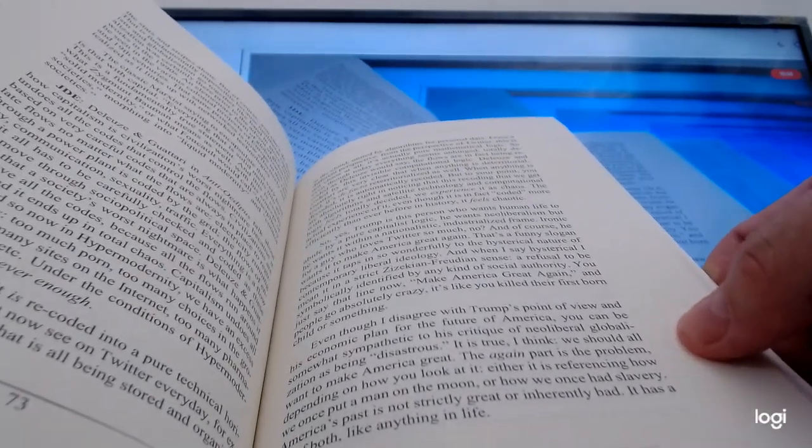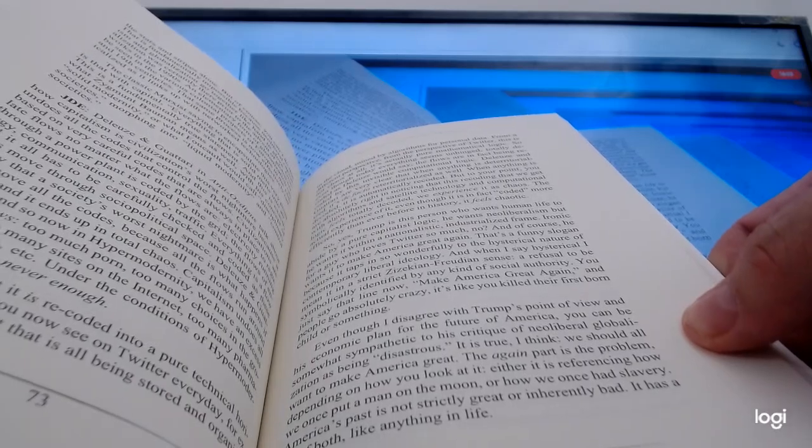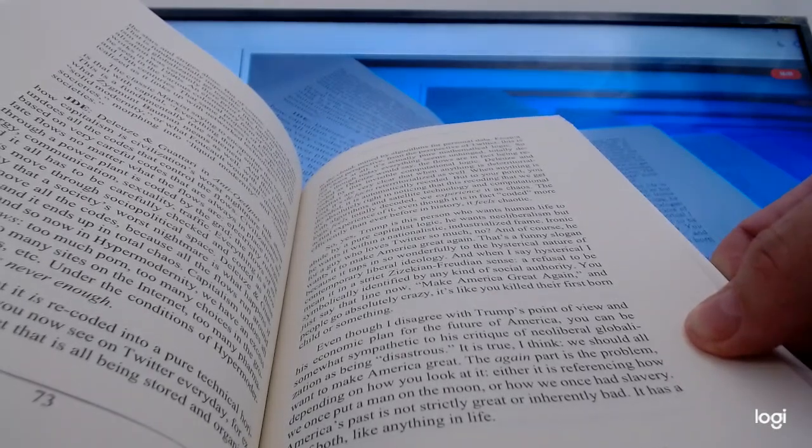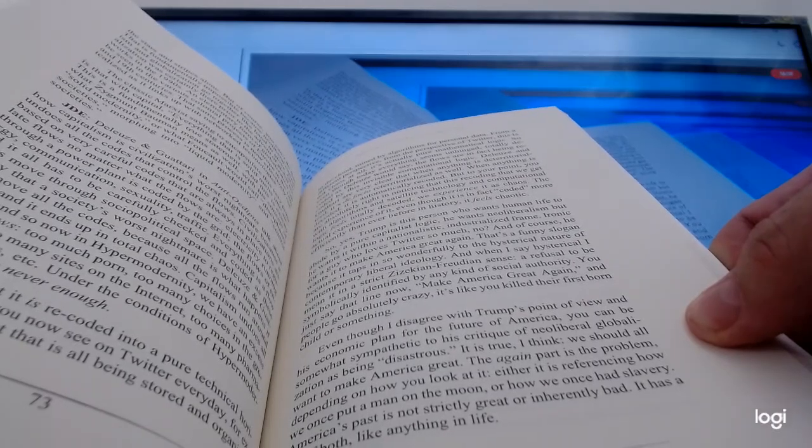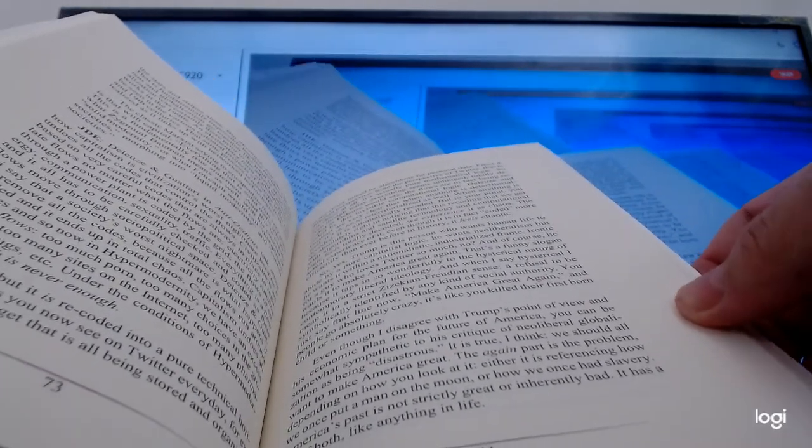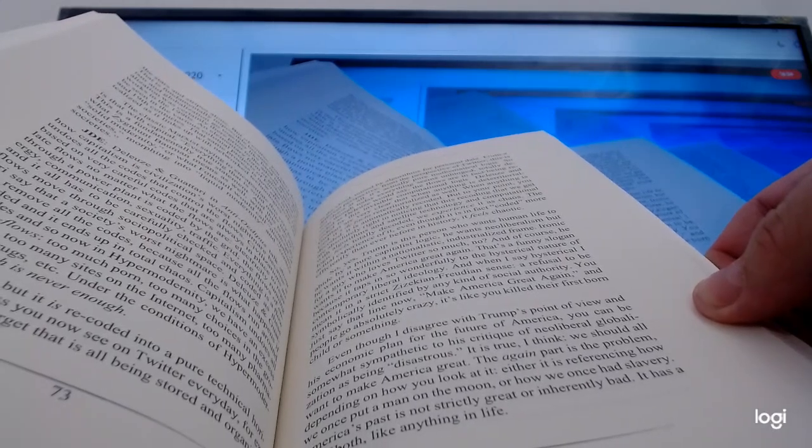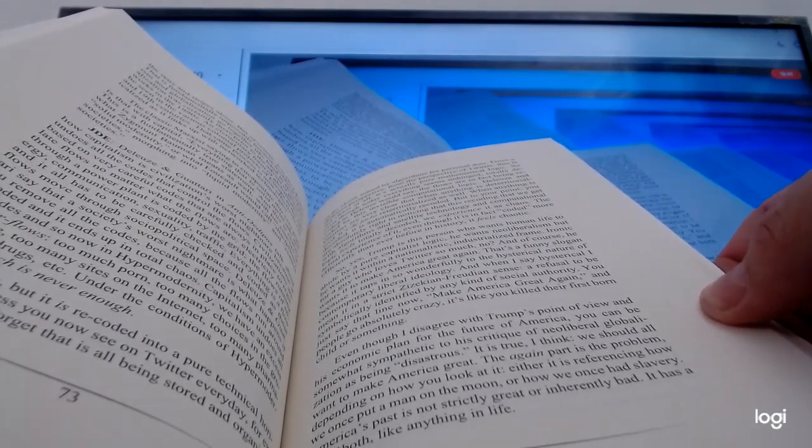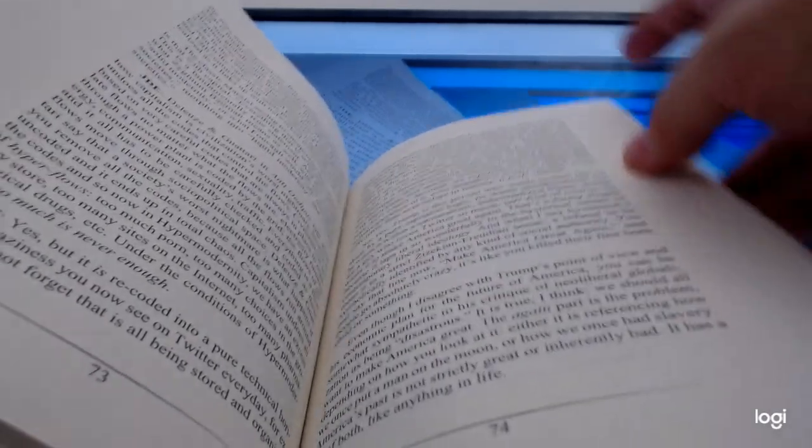Deleuze and Guattari are very clear that when anything is deterritorialized, it's de facto reterritorialized as well. When anything is decoded, it is automatically recoded. But to your point, you're absolutely right in noticing that this recoding that we get with algorithms and satellite technology and computational logic feels totally decoded. We experience it as chaos. The actual experience of it, even though it is in fact coded more efficiently than ever before in history, it feels chaotic. So yes, Trump is this person who wants human life to abide by pure capitalist logic. He wants neoliberalism, but he wants it within a nationalistic, industrialized frame. Ironic for a guy who loves Twitter so much, no?